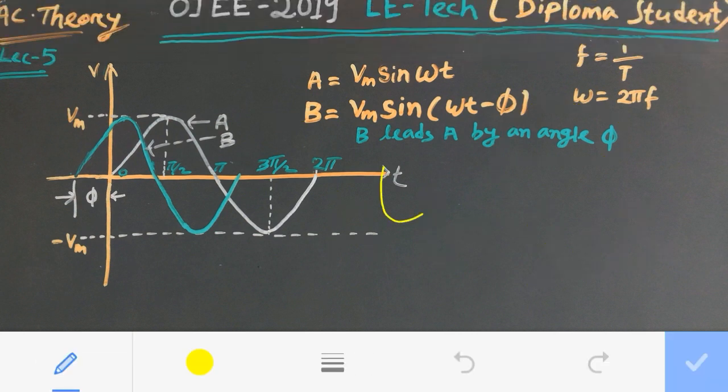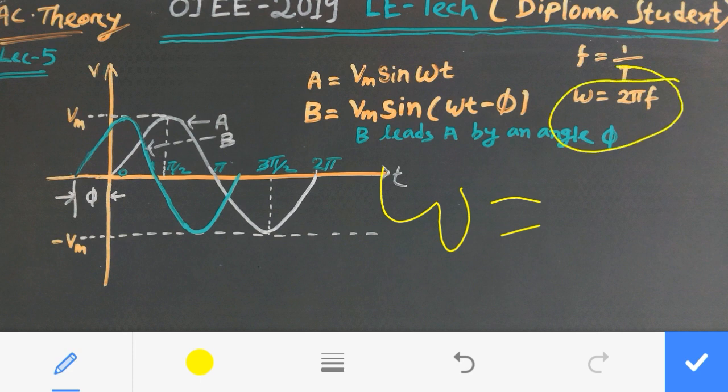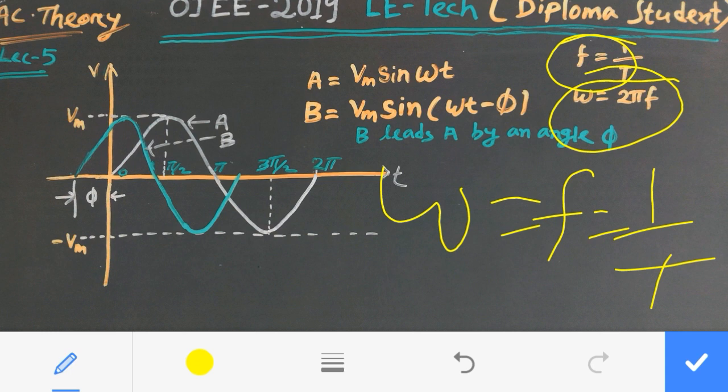Here, omega is nothing but the angular frequency which is given by 2 pi into F, where F is the frequency. And this frequency is reciprocal of the time period. That is, F is 1 by T.